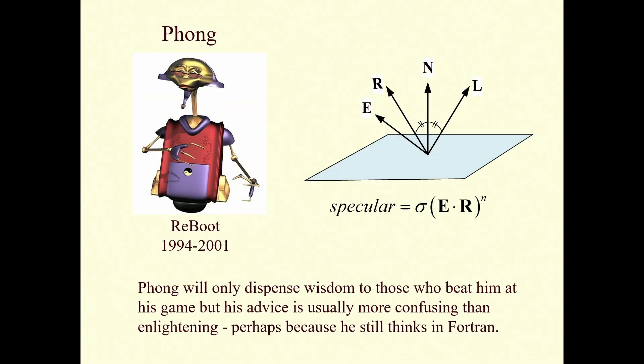Phong was the first one to do that. Phong sadly is no longer with us, but he has gotten some immortality by becoming a character in the first computer graphics TV series called Reboot. The idea is light comes in from L, bounces off N, and most of it's going to go in this direction R, equal angles of incidence and reflection. So the distance E is from R, that is E dot R, tells you how much specular you've got. And you raise it to some power to craft the function to make it fit.